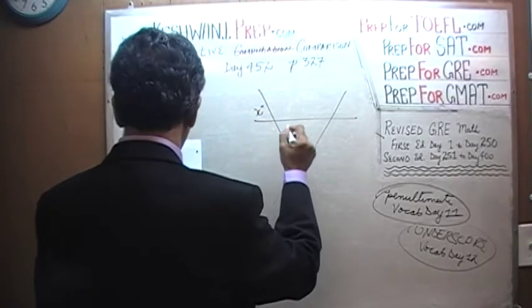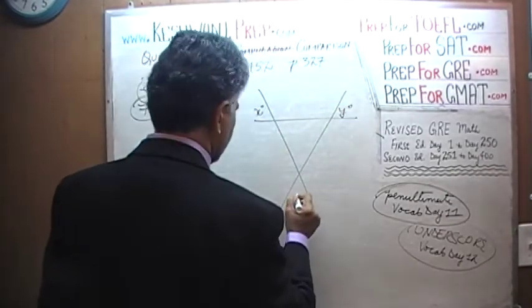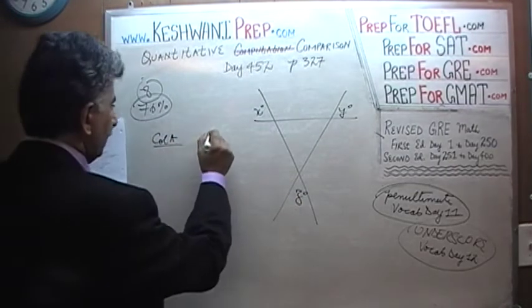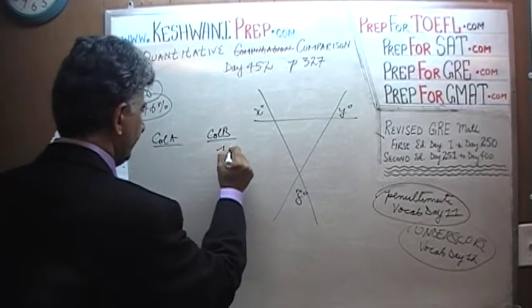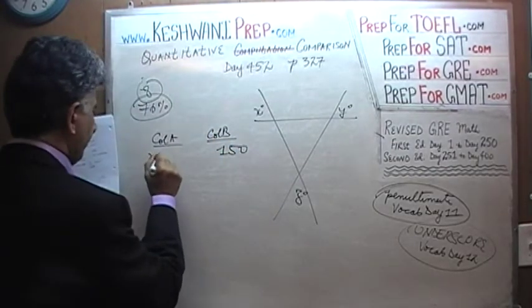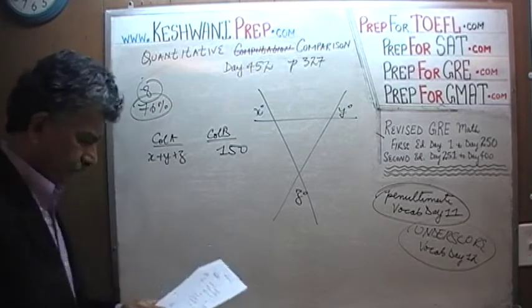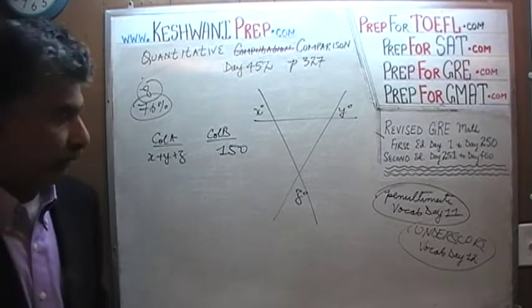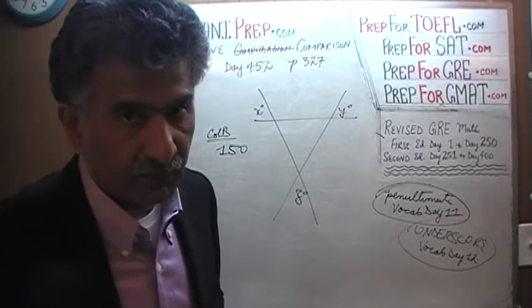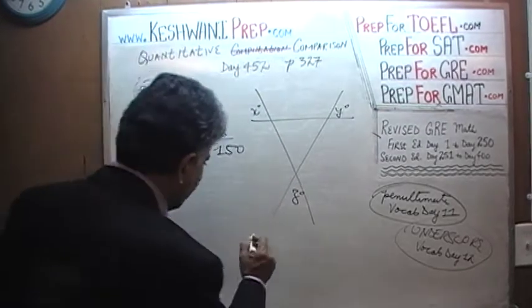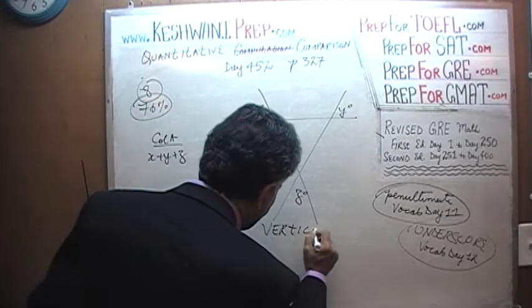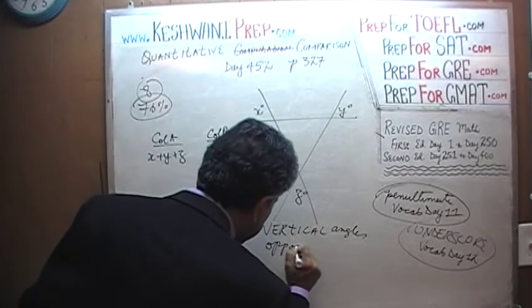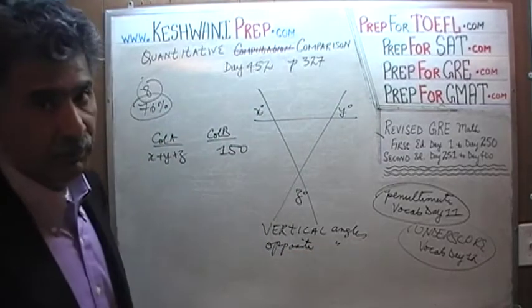We are told that one angle is x degrees, another angle is y degrees, and another is z degrees. What we are being asked to compare: Column A has x plus y plus z, and Column B has 150. To find the sum of x, y, and z, we use the concept of vertical angles — sometimes referred to as opposite angles — and opposite angles are equal.